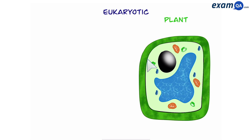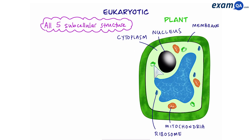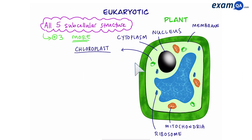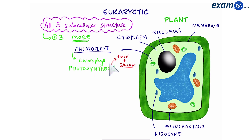Let's look at the plant cell now. The plant cell has all five subcellular structures that the animal cell had, but it has three more. It has a chloroplast, which is made of an important pigment called chlorophyll, and this allows photosynthesis to occur. Through this process, the plant can make food for itself in the form of glucose.